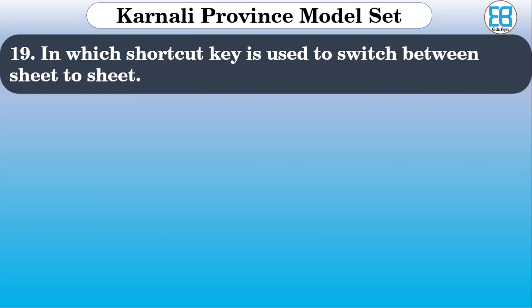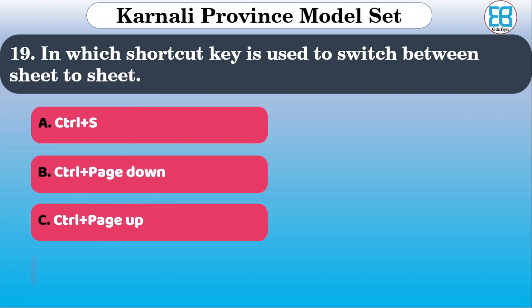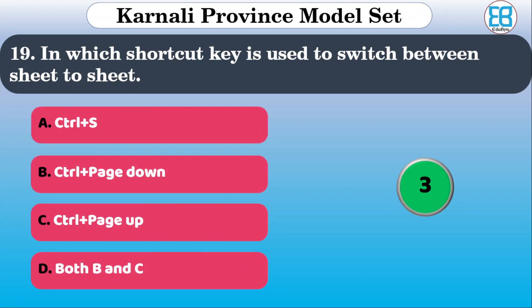Which shortcut key is used to switch between sheets in Excel? The options are: Ctrl+Left, Ctrl+Page Up, Ctrl+Page Down, both B and C. The correct option is Ctrl+Page Down / Ctrl+Page Up.